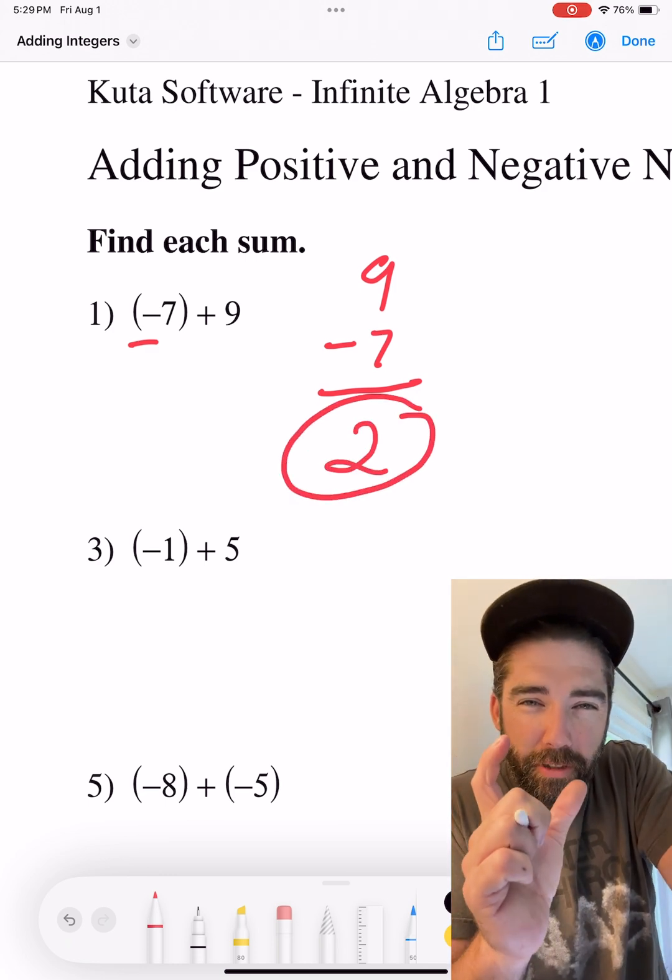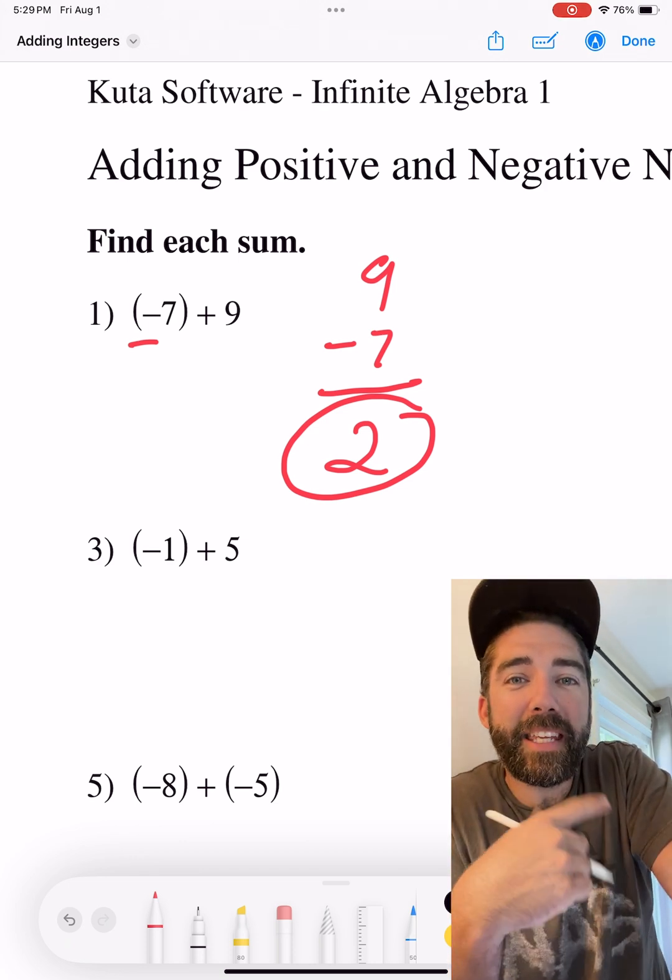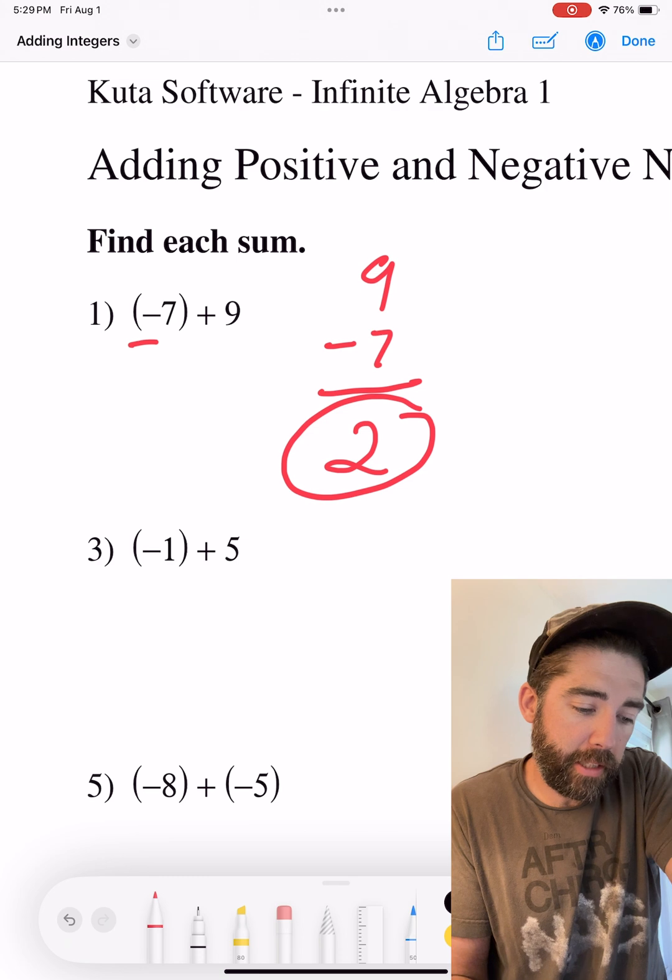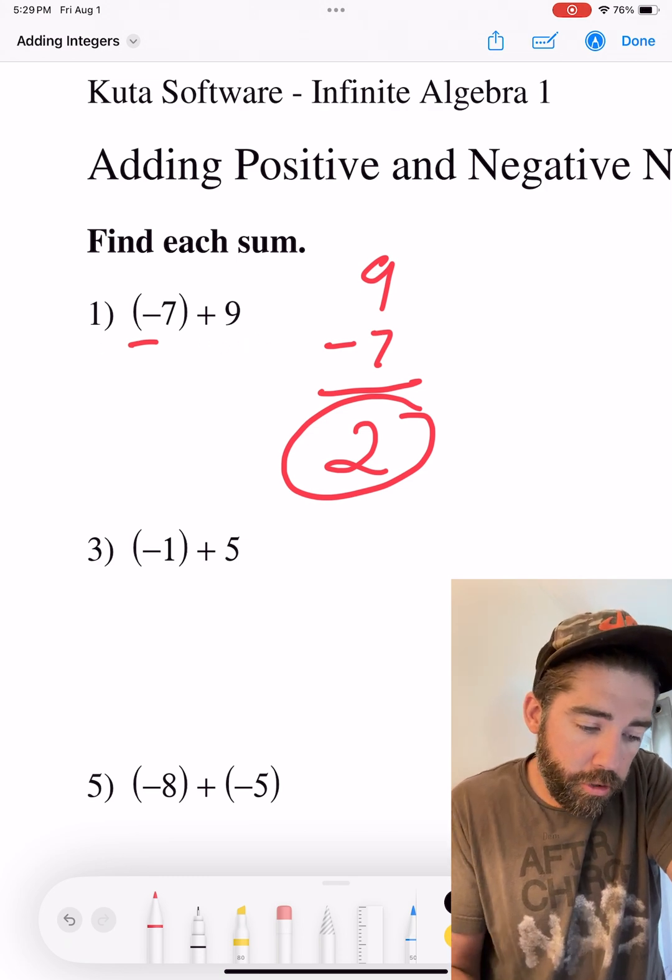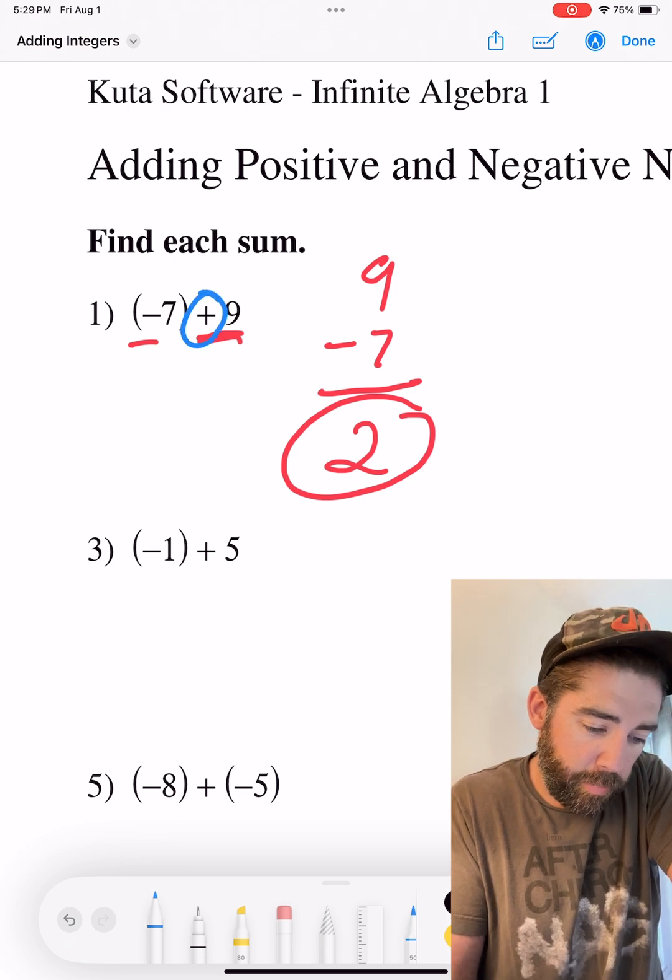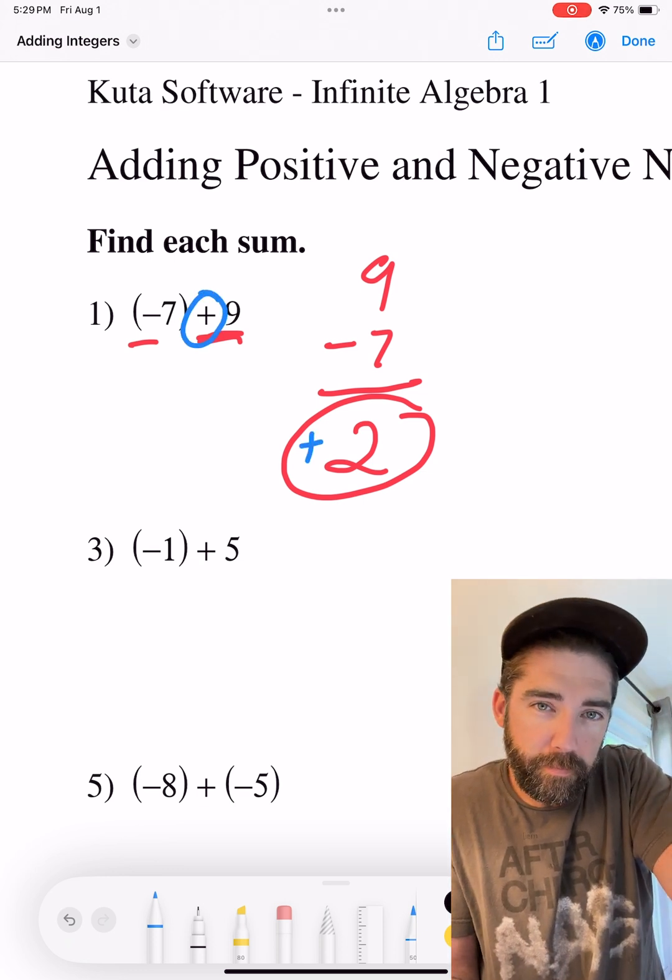So if the signs are different, subtract and then keep the sign of the larger number. We subtracted these two. The larger number is 9, so we're going to keep that sign, which is positive. If the signs are different, we subtract, keep the larger sign. Let's do it again.